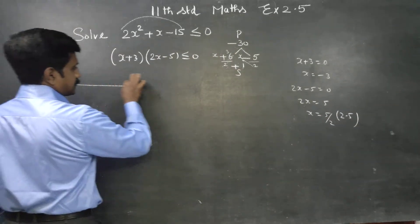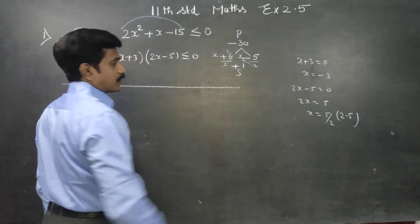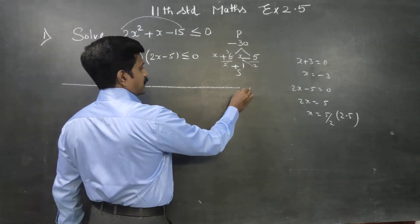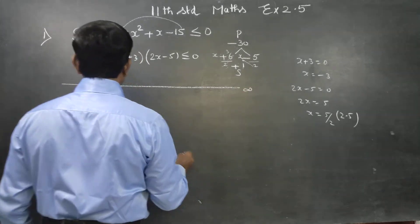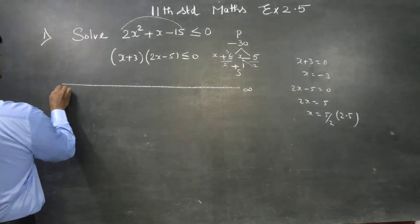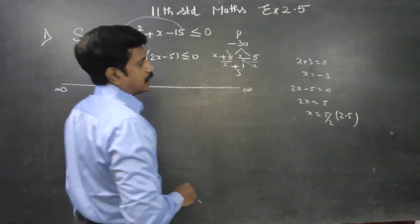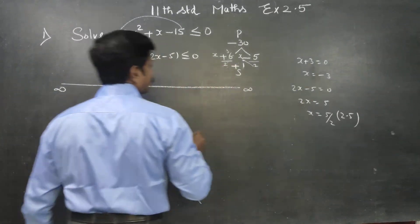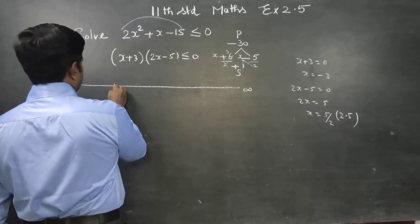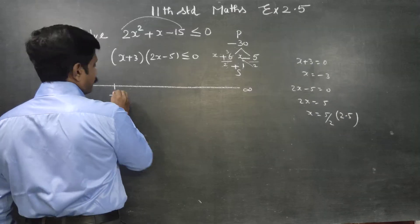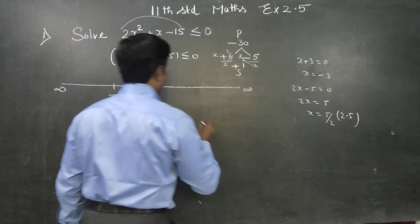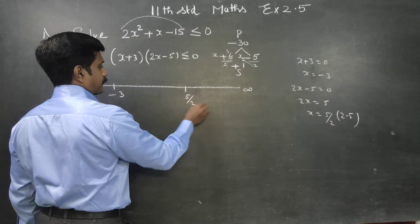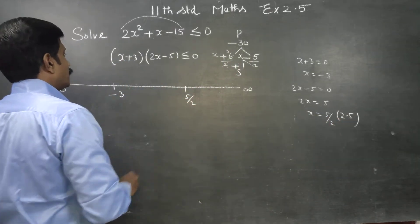Now draw a number line. This side is plus infinity, this side is minus infinity. Mark the critical points: minus 3 and 2.5 (which equals 5/2).